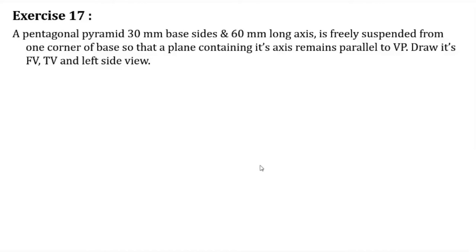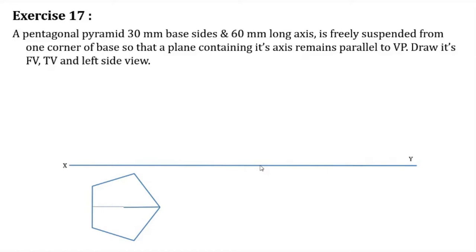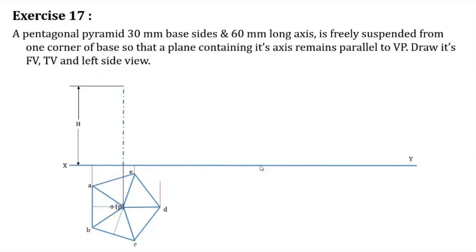We are using that property here. First, draw the XY line, then the pentagonal pyramid. This is the top view of the pentagonal pyramid, drawn such that one of its base edges is perpendicular to the XY line. Now the front view is also drawn — the height is 60.